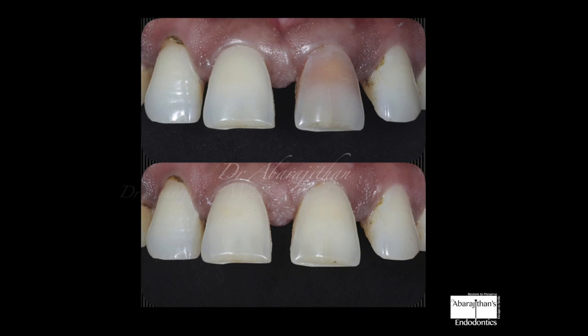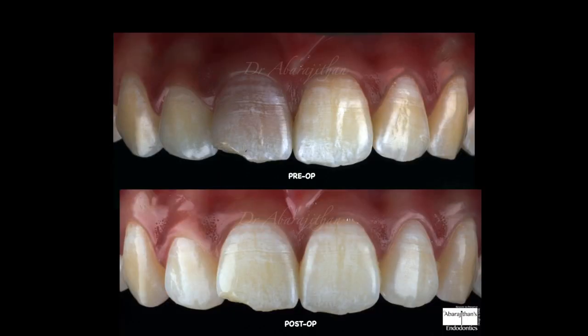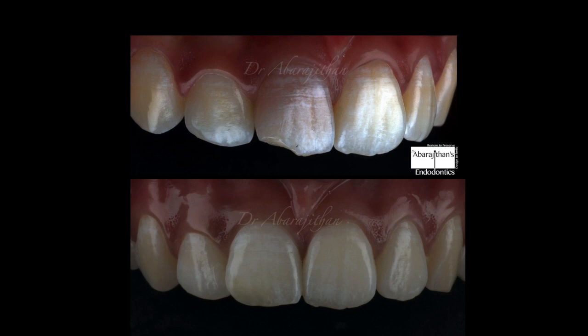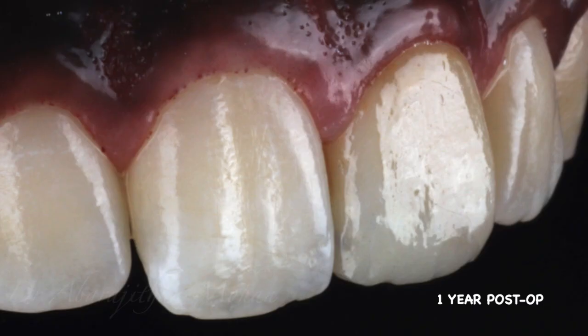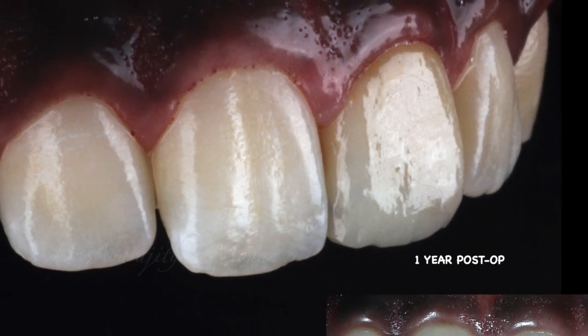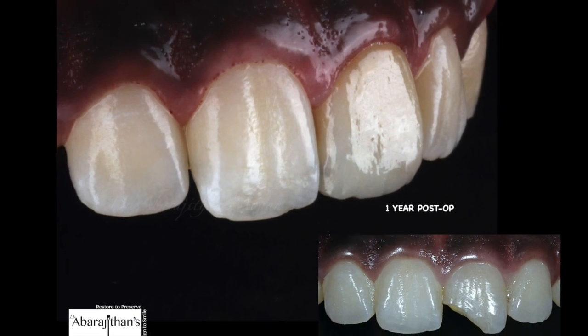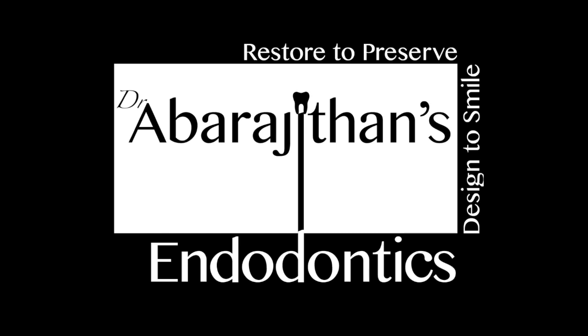Take-home message number two: not all endodontically treated teeth require crowns. Anteriors especially do not require a crown if there is no significant loss of tooth structure. For discoloration alone, non-vital bleaching or walking bleach is sufficient. For a small fracture, non-vital bleaching followed by a simple defect restoration is adequate. Only when the defect size is larger and durable long-lasting aesthetics are needed should you consider a veneer — not a crown, as in this case. That is how you judiciously select post-endodontic restoration. Thank you for watching.